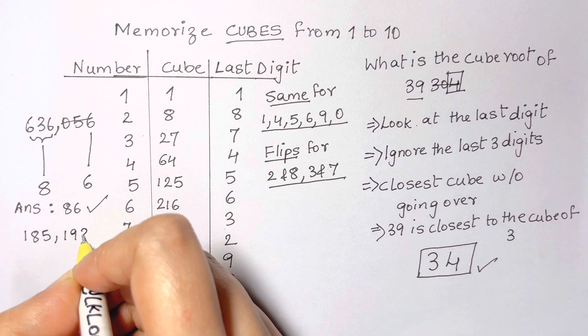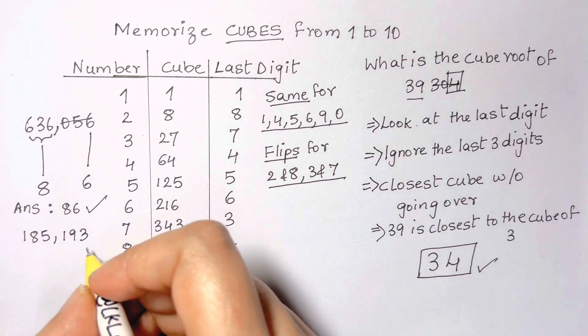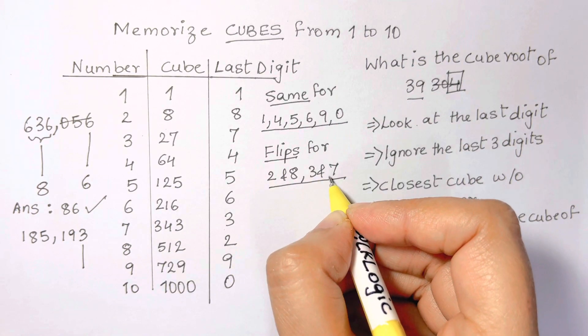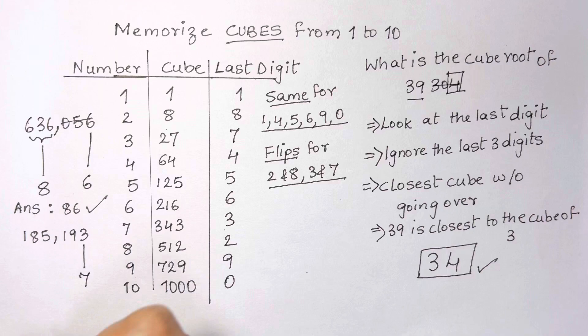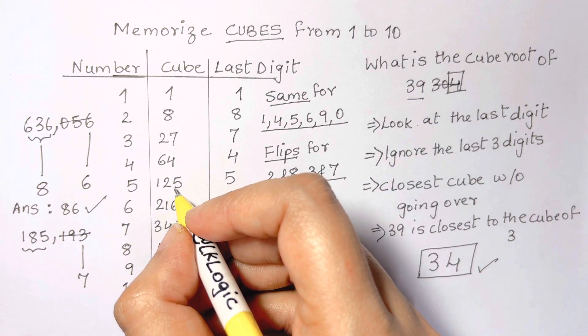Let's do another example: 185,193. We look at the last digit of 3, that corresponds to the number 7 because 3 and 7 flip. Then we ignore the last three digits and we look at 185, and that's just close to the cube of 5 without going over. So that gives us the answer of 57.